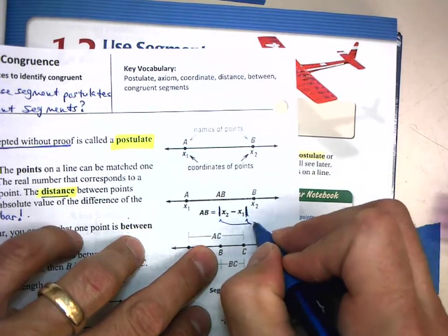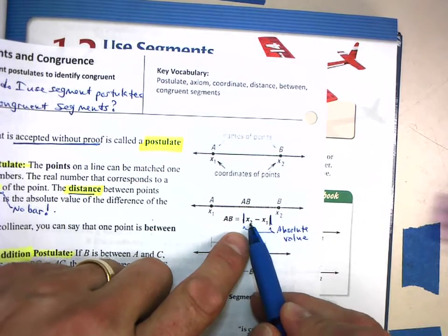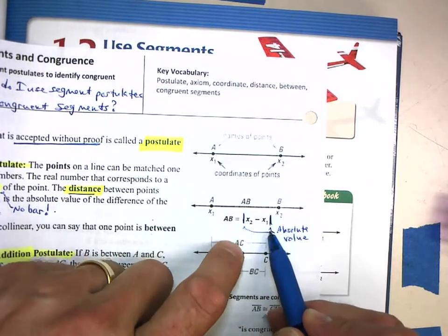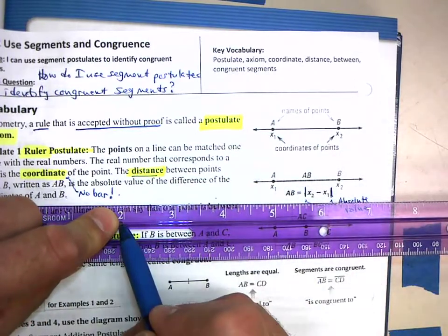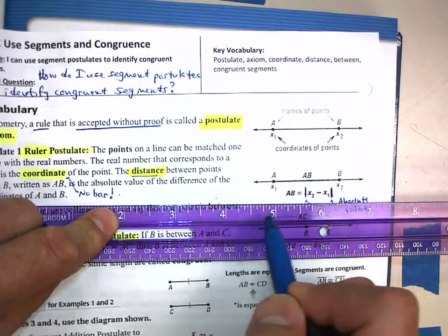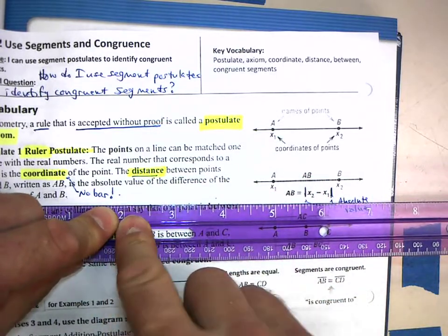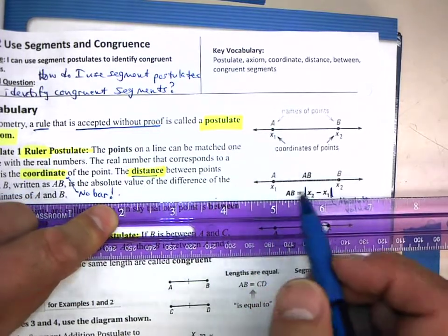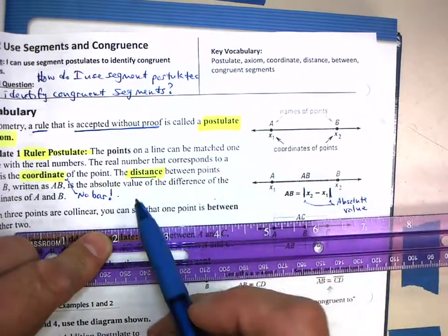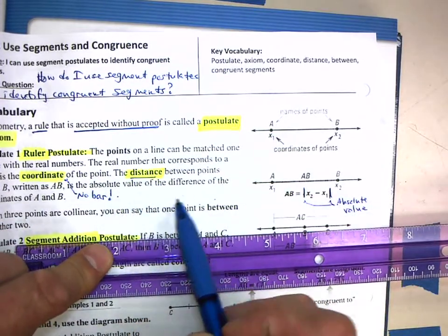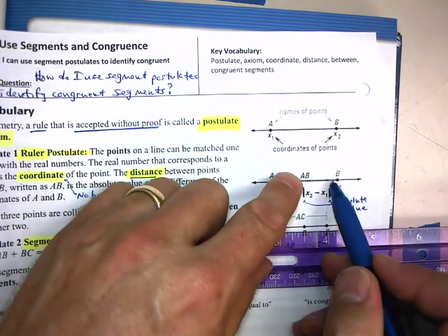For example, what is the distance between 2 and 5? If I said 5 minus 2, that gives me 3. But what if I switched those and said 2 minus 5? That's negative 3. Is there such thing as a negative distance? No way, you can't drive a negative distance. That's why we say the distance is the absolute value of the difference of the coordinates. The absolute value of negative 3 is positive 3.